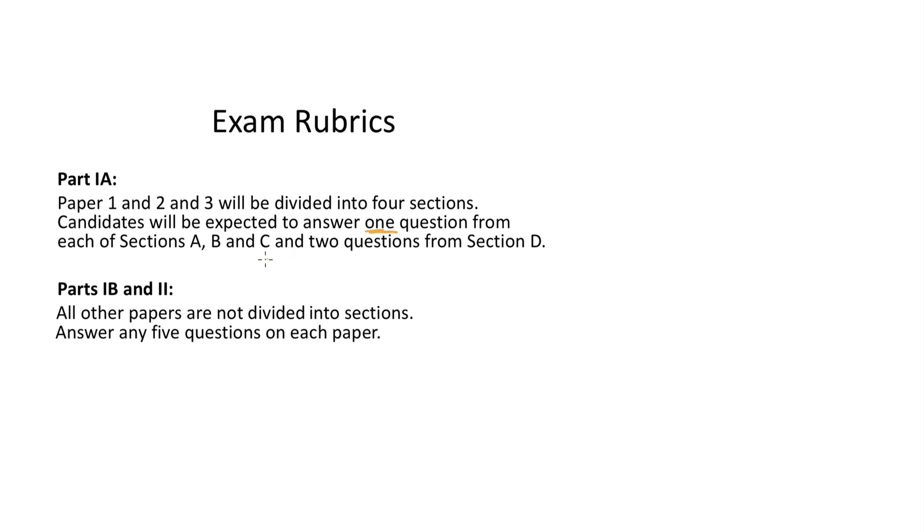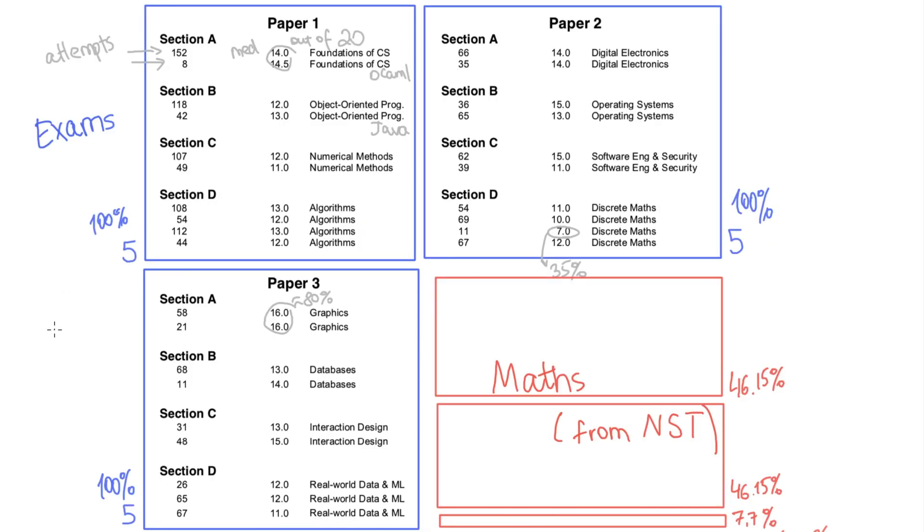Let's remind ourselves what the deal was in first year. We had to choose one question from sections A, B, and C, so that's three questions, and two questions from section D. Together we have five questions out of nine or ten available. Here's a slide from the last video. We had three papers and needed to answer five questions in each of them. Not a single topic could be skipped. You had to go to all the lectures, or at least revise from all the notes.